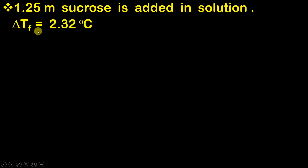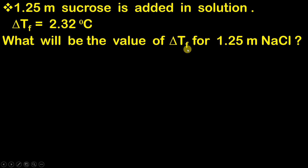The question says that the depression in freezing point was 2.32°C. When you add 1.25 molal sucrose in the solution, the depression in freezing point is 2.32°C. Now the question asks us to find out what will be the value of depression in freezing point for 1.25 molal NaCl. This NaCl is an electrolytic solute and sucrose is a non-electrolytic solute. Although the concentration is the same — both are 1.25 molal — the depression in freezing point will be different because sucrose is a non-electrolytic solute and NaCl is an electrolytic solute.